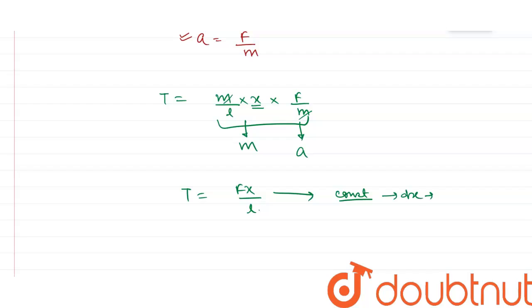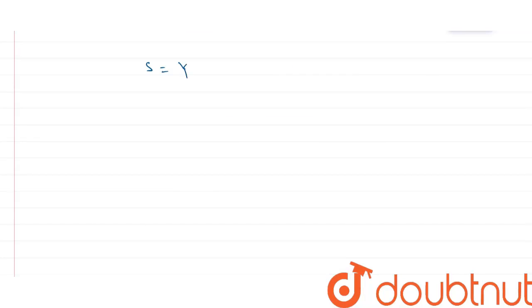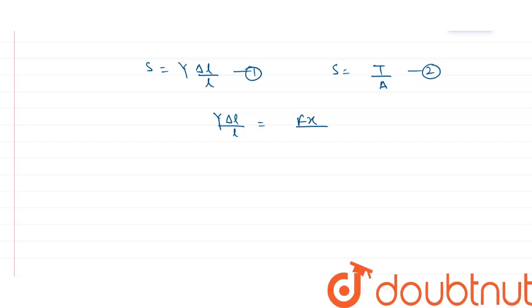Since dx is very small, the value of t is constant for this small segment. We know that stress equals Young's modulus times strain, written as: stress = y × (change in length / original length). Stress is also given by force upon area, which here is tension upon area. Equating both equations: y·δl/l = t/a, and the value of t is fx/l.